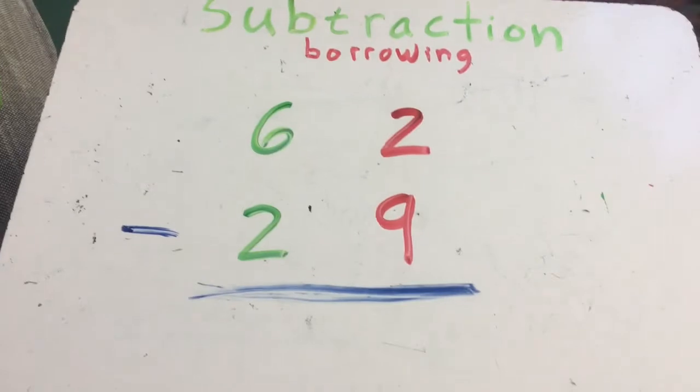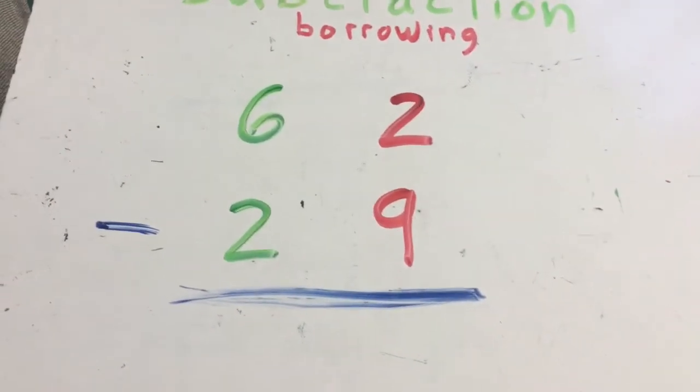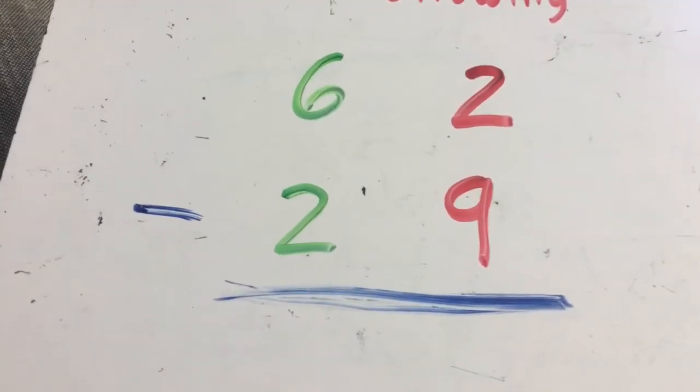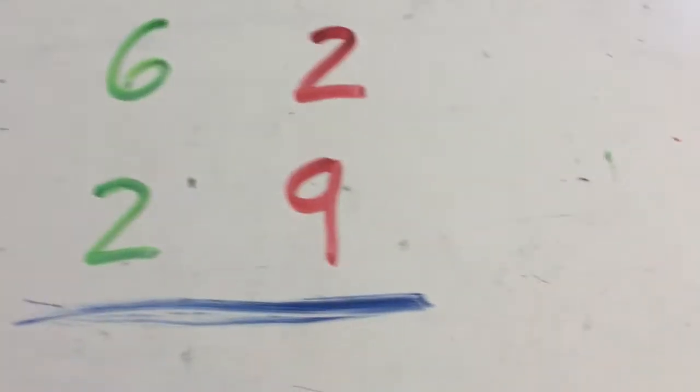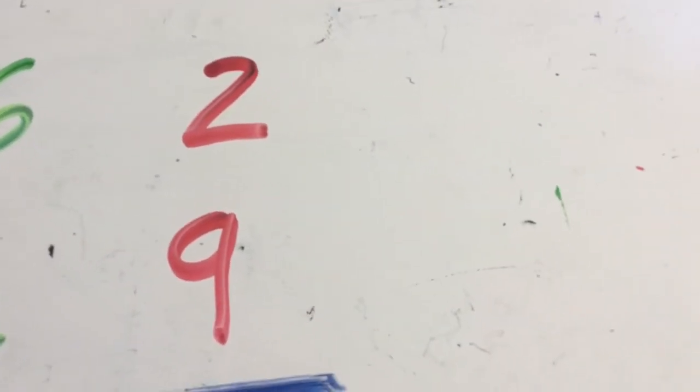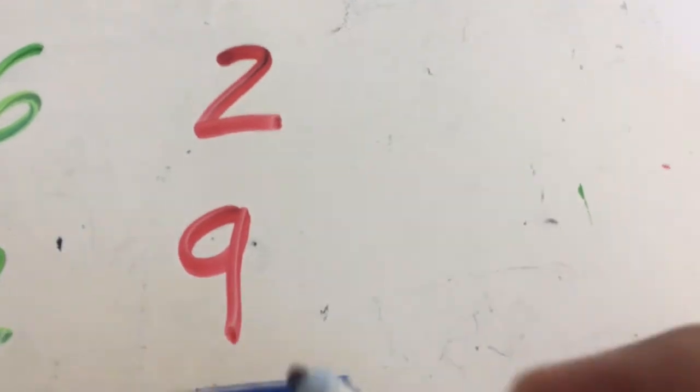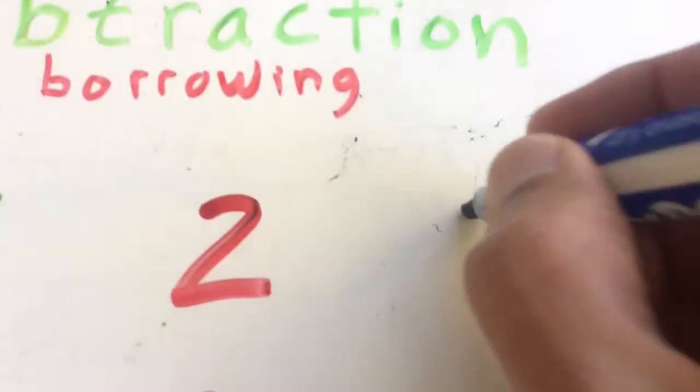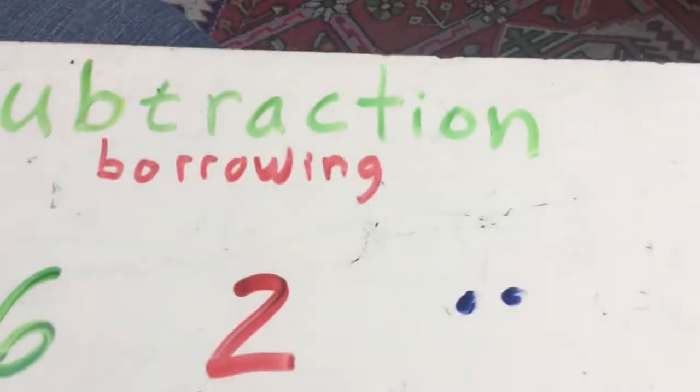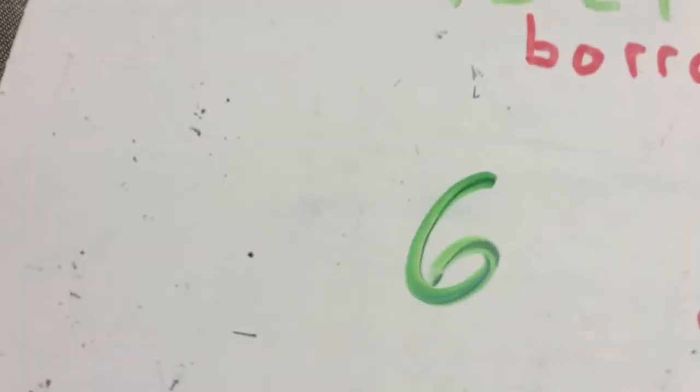Okay. The big problem is 62 minus 29. Well, I'm subtracting, and I always start over at the ones place. Okay. I have, can I take nine away from two? If I have two, I cannot take nine away from that. I cannot do that. Again, I need to borrow from the next door.